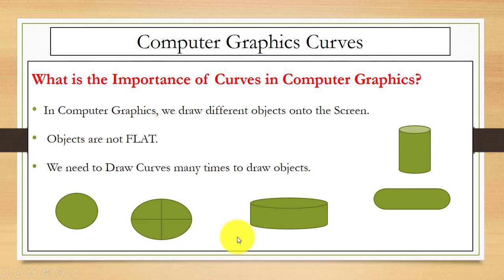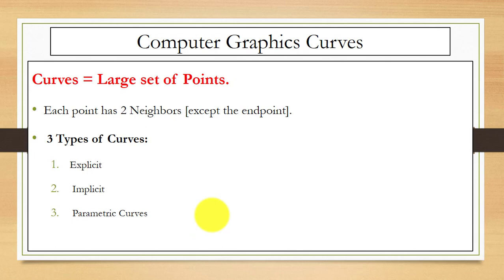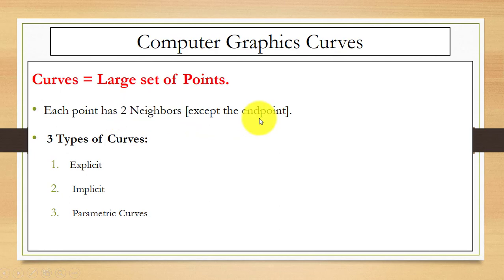We have different types of objects that are not flat, so in order to draw them we need curves. Now, what is a curve? A curve is just a large set of points where each point has two neighbors, except the end points. We have three types of curves in computer graphics: implicit curves, explicit curves, and parametric curves.